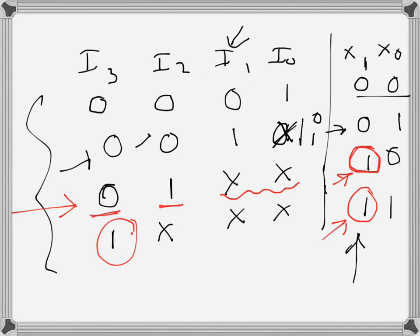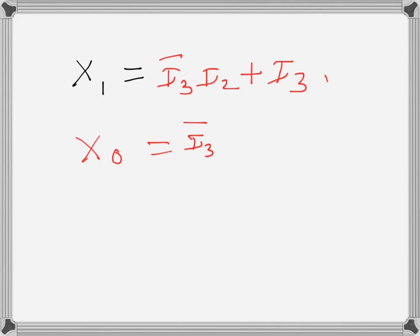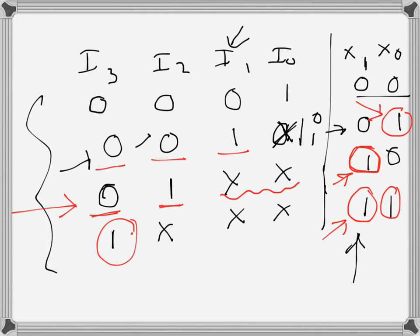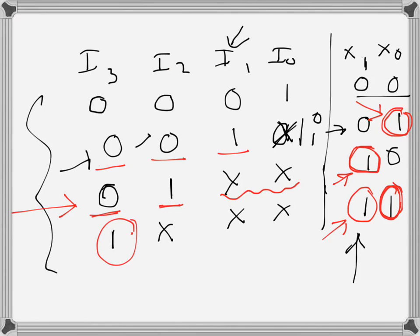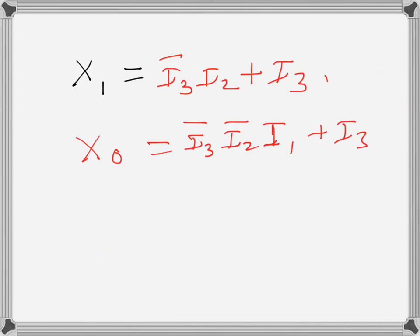For output x0, there are also two rows where x0 is 1. In the first, i3 and i2 must both be 0 and i1 must be 1, giving the term i3̄·i2̄·i1. In the second, i3 is 1 and others are don't-care, giving i3. So x0 = i3̄·i2̄·i1 + i3. We can implement both outputs using basic gates — AND gates, OR gates, and inverters — to design a 4-to-2 priority encoder.